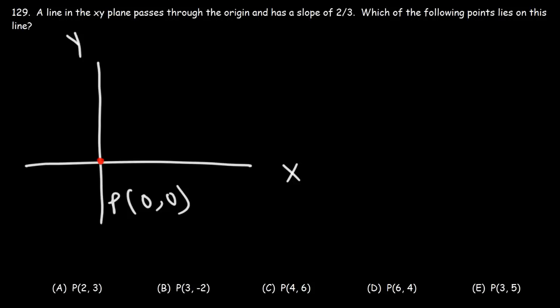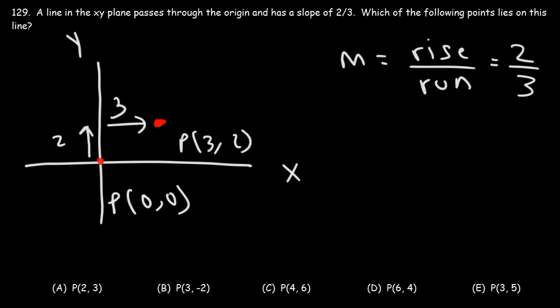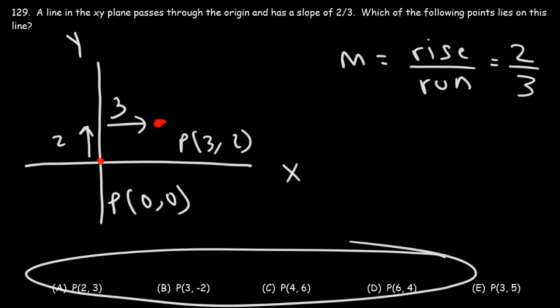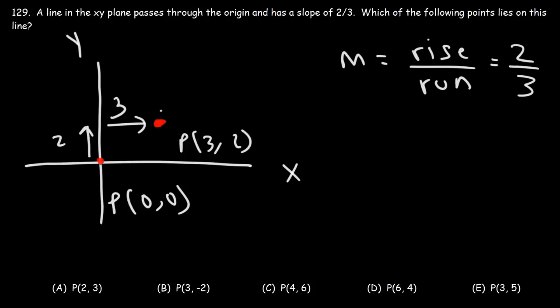Now the slope is 2 over 3. The slope is basically the ratio between the rise over the run. So we can get the next point if we rise 2 units and run 3 units to the right. We're going to travel up 2 units and over 3. So this will take us to the next point, which will have an x value of 3 and a y value of 2.